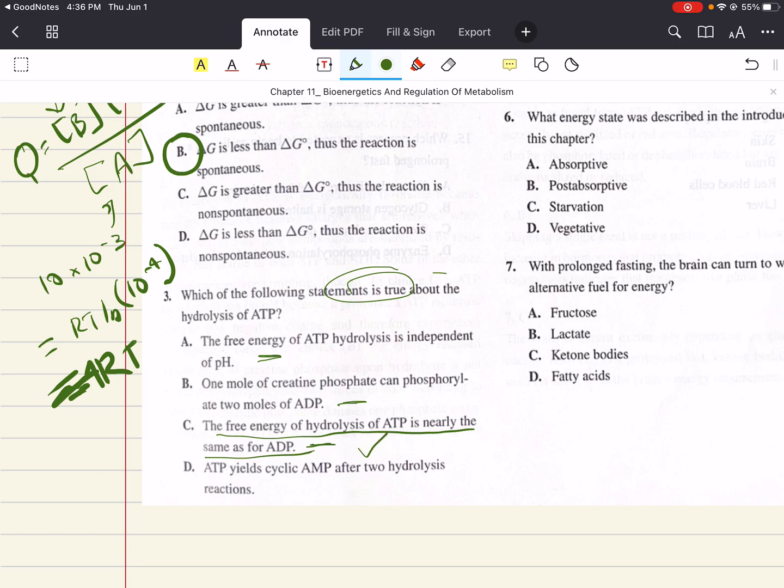B says the energy released by one mole of creatine phosphate upon hydrolysis is sufficient to phosphorylate two moles of ADP. Creatine phosphate donates one phosphate group to a molecule of ATP. So one mole of creatine phosphate will only phosphorylate one mole of ADP. Answer choice C, the free energy of hydrolysis of ATP is nearly the same as ADP. That is true. We just said that earlier. D is tempting again, just like A and B. But the removal of two phosphate groups from ATP yields AMP, not cyclic AMP. So the correct answer here, the only true statement is that the free energy of hydrolysis of ATP is nearly the same as for ADP. So three is C.